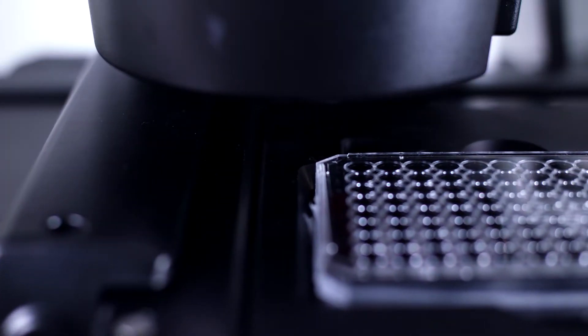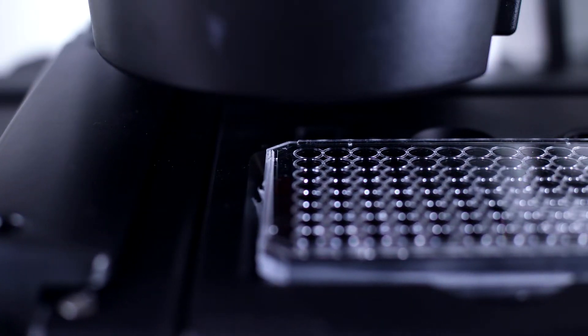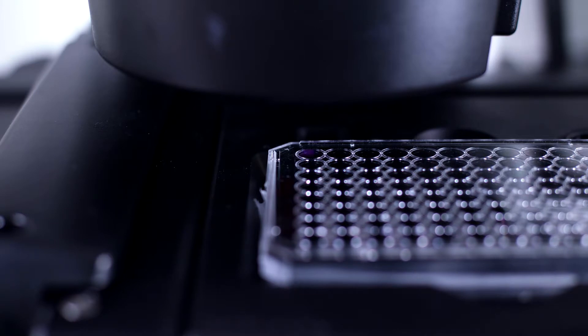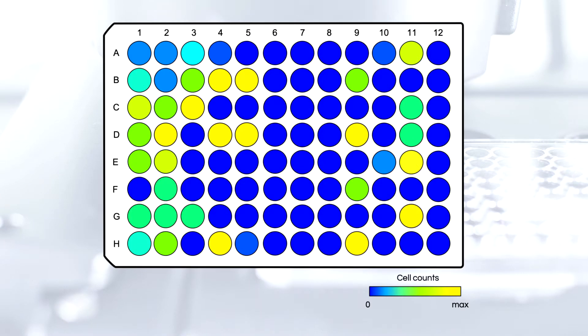Using phase contrast or fluorescence microscopy imaging, you can evaluate a variety of parameters such as cell number, morphology, and surface marker density, as shown in this heat map.